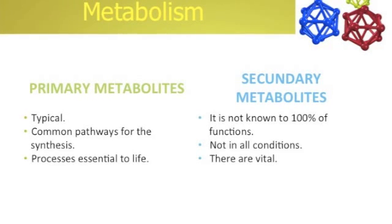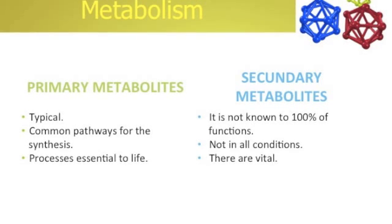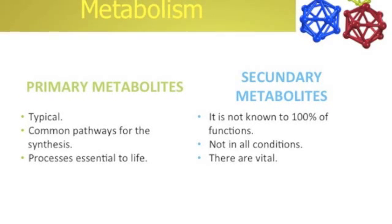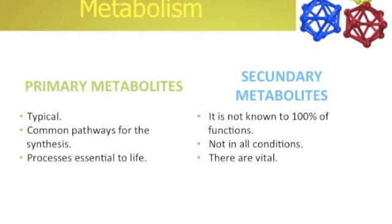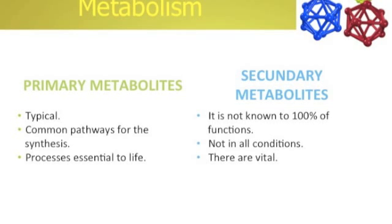The primary metabolites are produced for mainly activities — all of them are essential to survive or to live. They are atypical for each plant and have common pathways for the synthesis of different kinds of products.